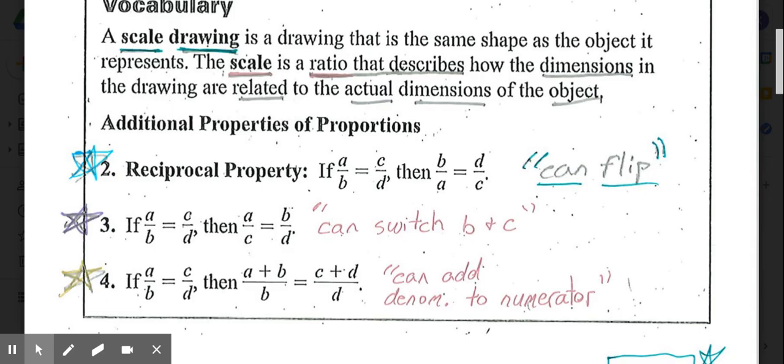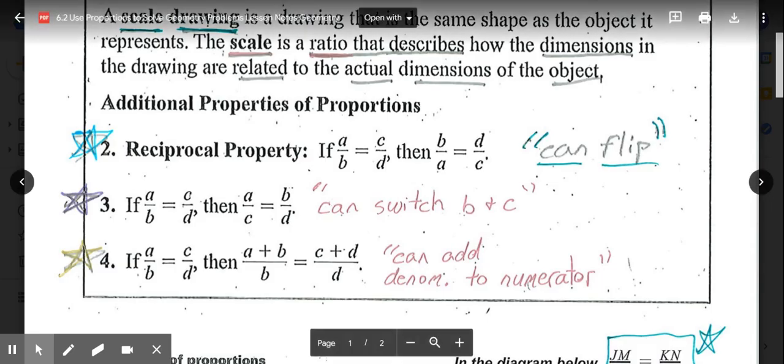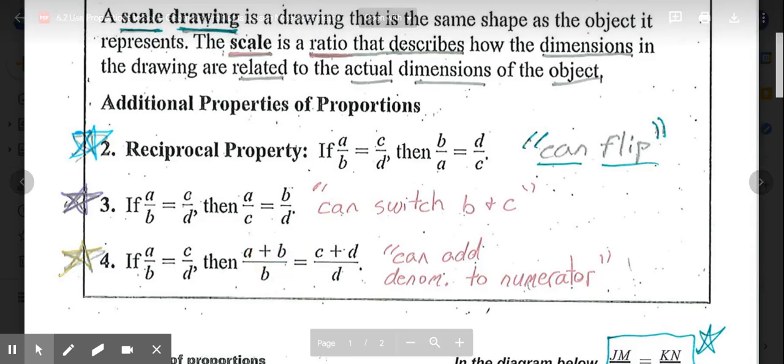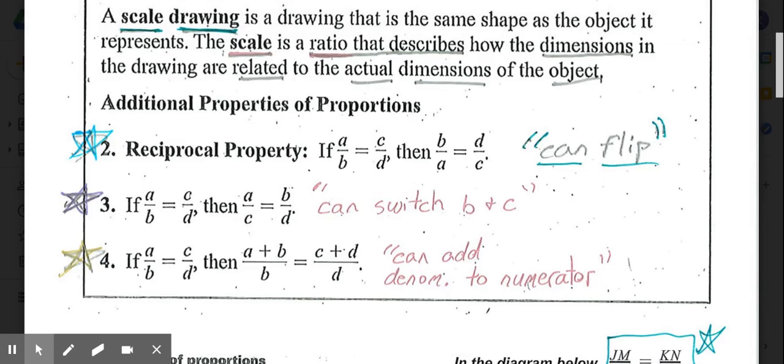In property 4, if we have a/b = c/d, then (a+b)/b = (c+d)/d. What that property is saying is we can add the denominator to the numerator on each side and it's still true. So add b on top on the left, add d on top on the right. These three properties plus our one proportional property from 6.1 are the main properties we're using in today's lesson.